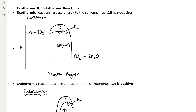Exothermic reactions release energy to the surroundings, so the enthalpy change is negative. You can see that in this combustion reaction — it's important to note that combustion reactions are always exothermic. The enthalpy decreases from the reactants, so CH₄ and 2 moles of oxygen, to the products, CO₂ and 2 moles of H₂O. That gives a negative enthalpy change, and the activation energy is shown at the top.